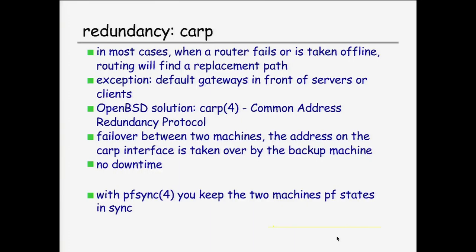The external BGP speakers in the diagrams are redundant — if one isn't available, the other path is used. But the default gateways in front of the smaller networks are a problem; you want those redundant too. In OpenBSD we have CARP, the Common Address Redundancy Protocol. With CARP you can have two machines as default gateways for a network — they do failover between them. One is master, one is backup; if one fails the other takes over. You can take one down for maintenance or upgrades without downtime. CARP works together with PF because the two can sync PF states, so no TCP sessions are lost during a failover.